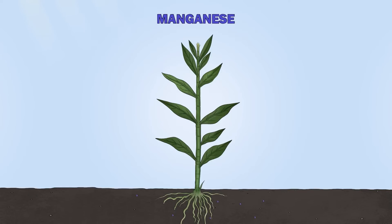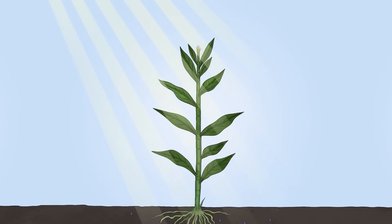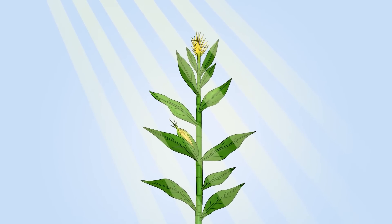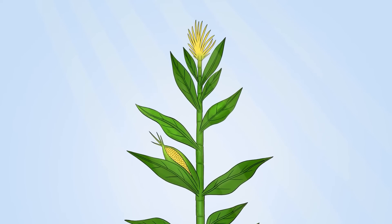Or take manganese. Plants need manganese for photosynthesis. It also plays an important role in stimulating reproductive growth and is essential to the formation of plant buds, or in the case of corn, the corn ear and tassel.